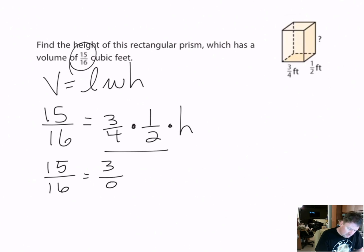I'm going to have 15/16 equals 3 times 1 is 3, and 4 times 2 is 8, times the height. This is a little tricky but it's not impossible. Once again, because I'm multiplying 3/8 times h, I have to use division to undo it.